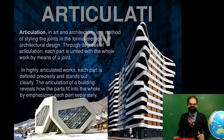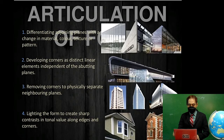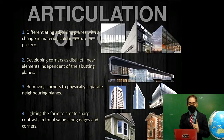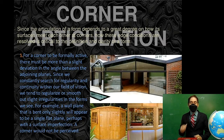Articulation is achieved by emphasizing parts separately, differentiating adjoining planes with a change in material, color, texture, or pattern; developing corners as distinct linear elements independent of abutting planes; removing corners to physically separate neighboring planes; and lighting the form to create sharp contrast along edges and corners. Articulation of form depends greatly on how its surfaces meet each other at corners.